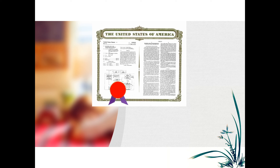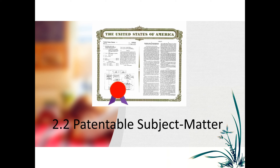Session 2: patentable subject matter. We will start from a short introduction to the modern patent system. What is a patent? A patent is a set of exclusive rights granted by the government for an invention. The invention must be new, involve an inventive step, and be capable of industrial application.